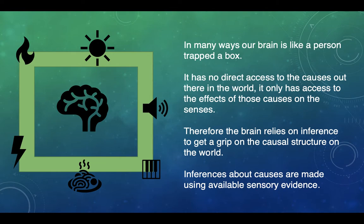Therefore, this means that the brain has to rely on inference to get a grip on the causal structure of the world. So it has to make inferences to make sense of the causes out there in the world because it doesn't have this direct access. And the inferences about the causes are made using the available sensory evidence.